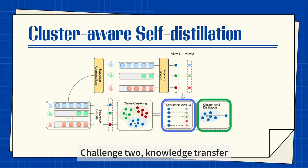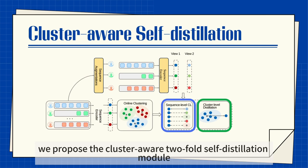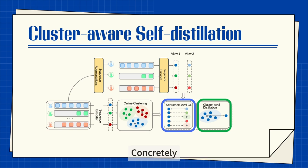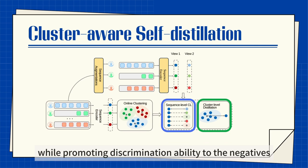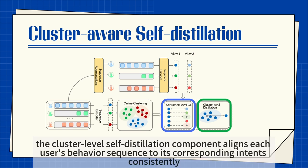Challenge 2: Knowledge Transfer. To leverage intent-level information from user behavior sequences, we propose the Cluster-Aware Two-Fold Self-Distillation module, which includes a sequence-level contrastive component and a cluster-level self-distillation component. The sequence-level contrastive component maximizes mutual information among the positive augmentation pair of the sequence itself while promoting discrimination ability to the negatives. Simultaneously, the cluster-level self-distillation component aligns each user's behavior sequence to its corresponding intents consistently.